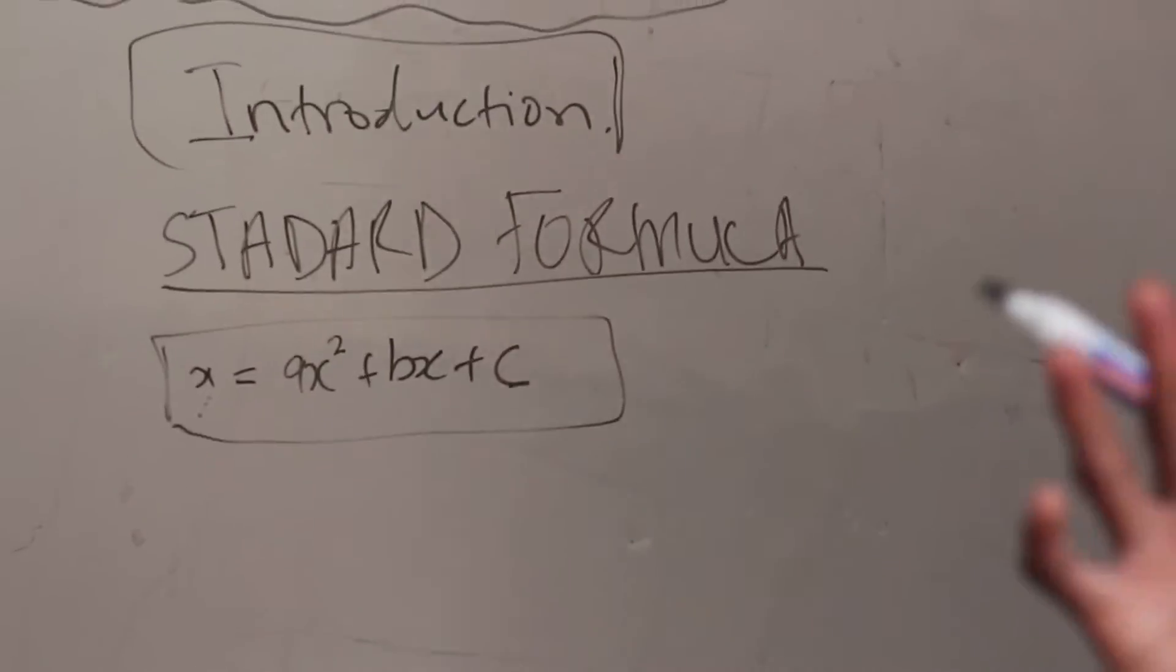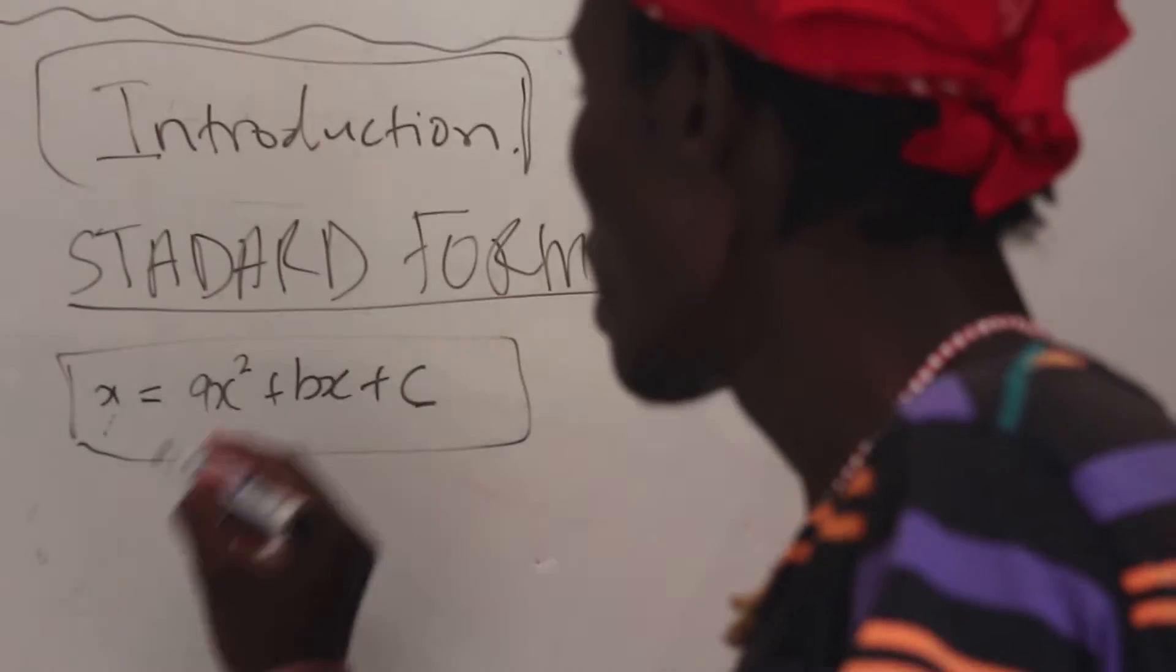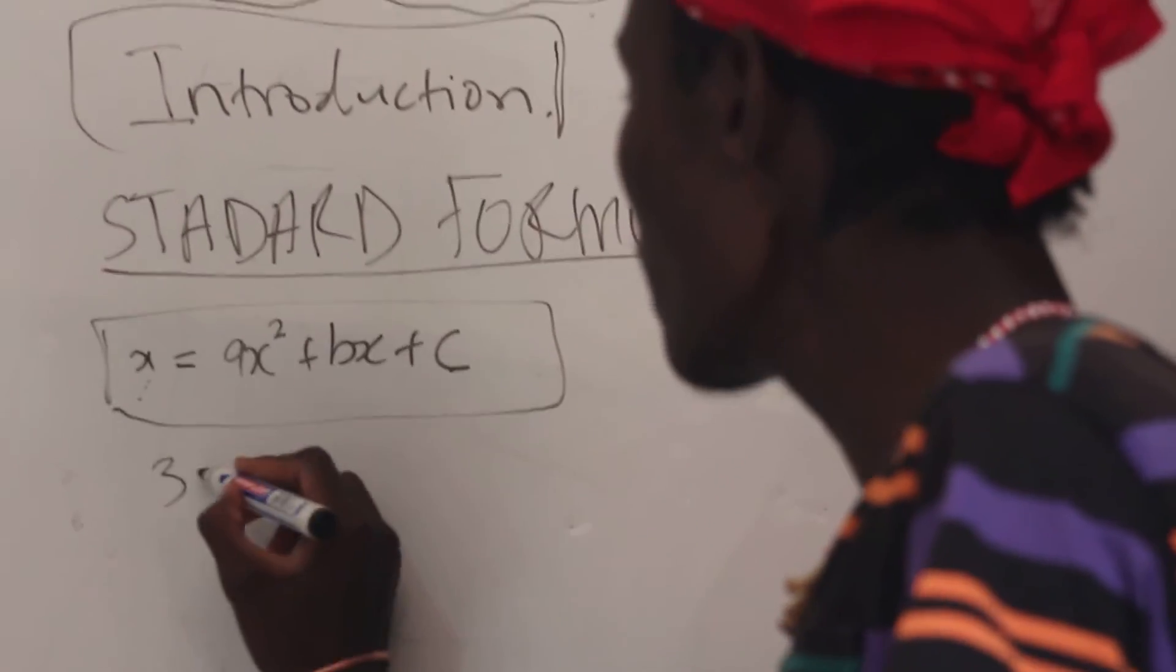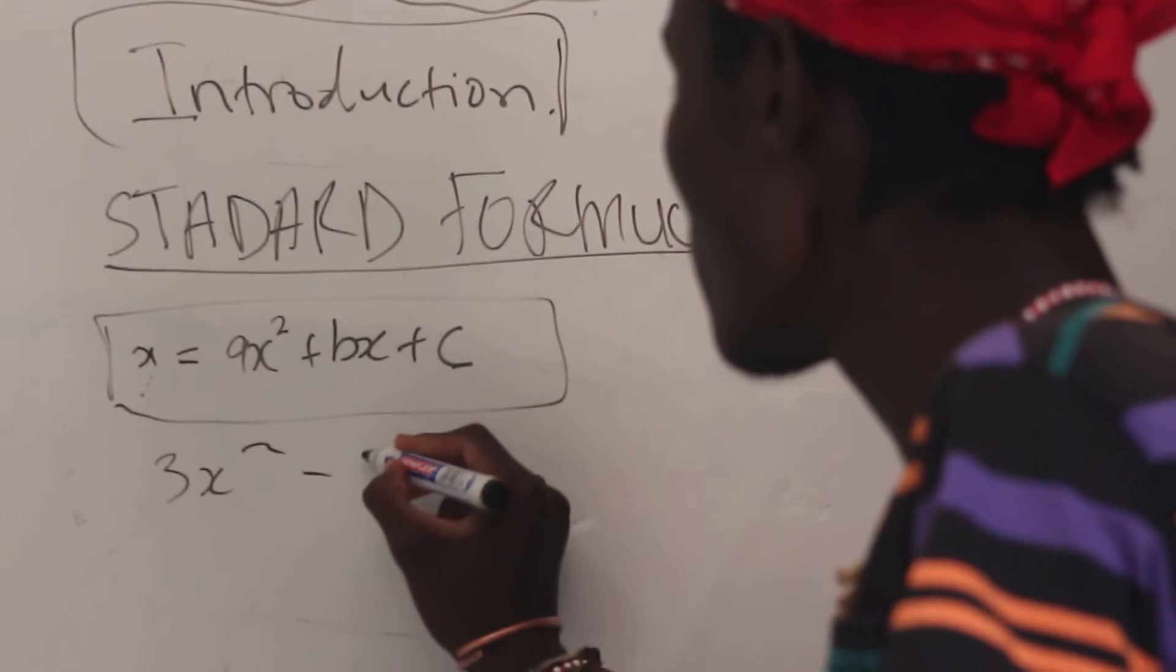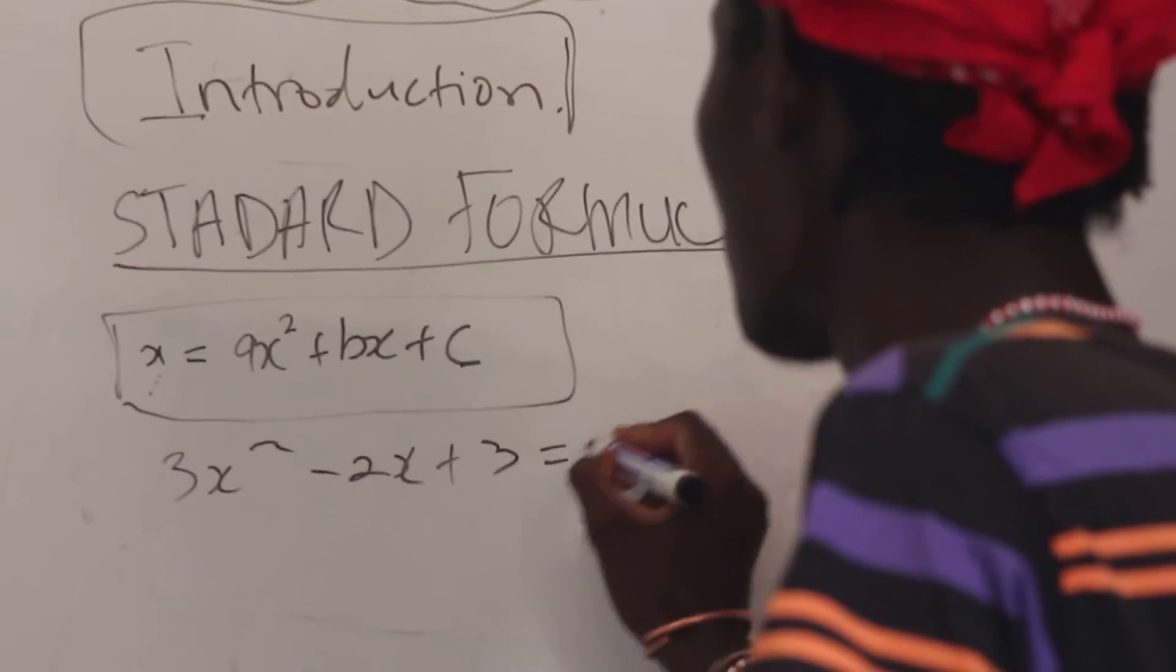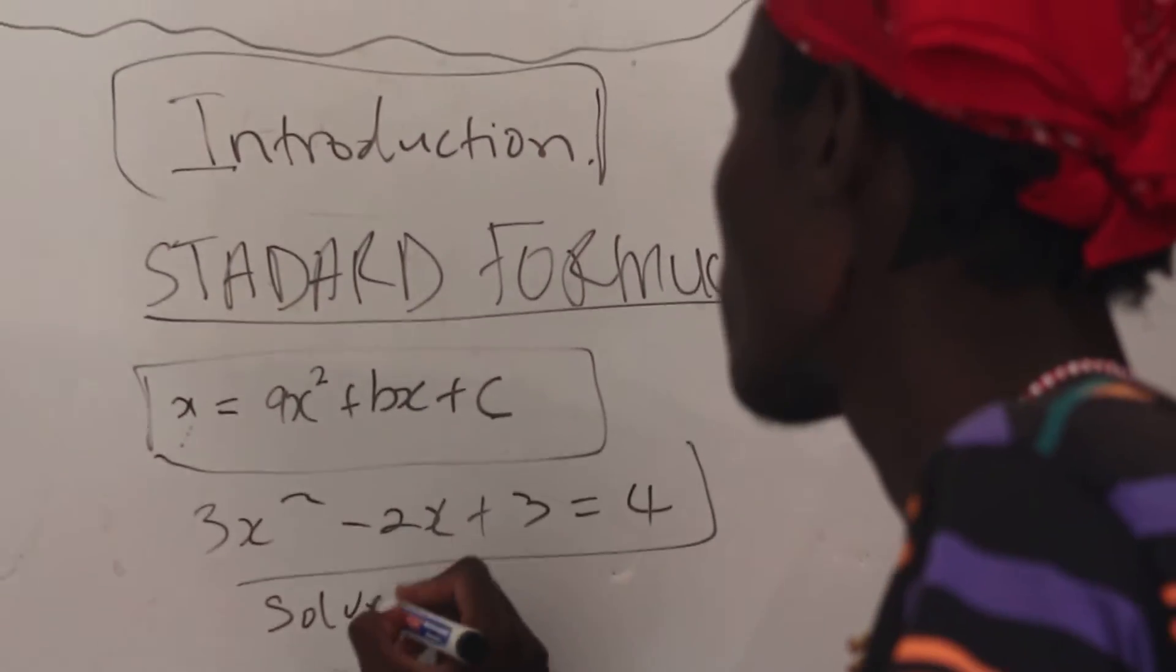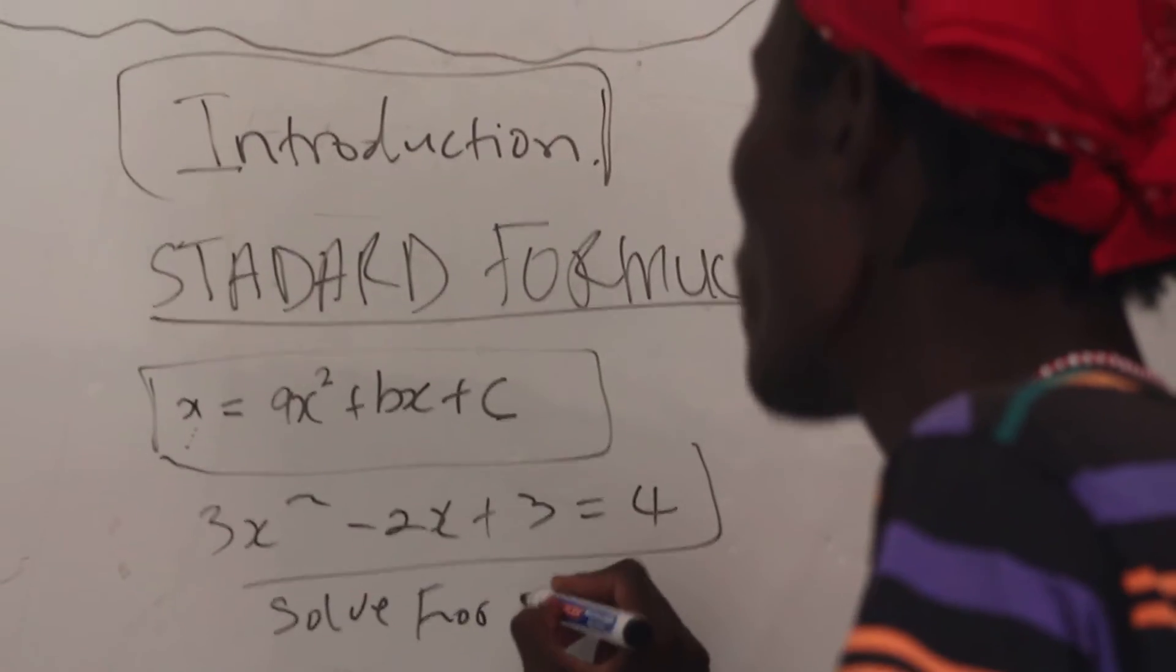You probably ask yourself how does this thing help you. So for instance, if I have an equation that says maybe 3x² - 2x + 3 = 4, and they're saying to you that you must solve for x.